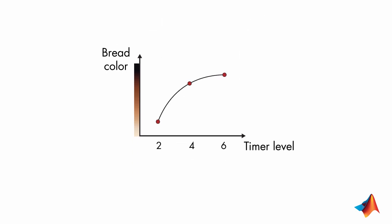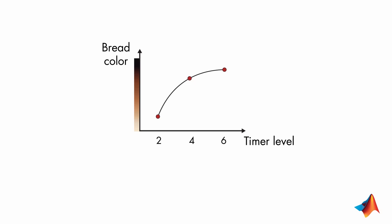Remember that you want to find the time setting for your desired bread color. To find this mathematically, let's equate the input to u and the output to y. In the experiments, for different values of u, you found the corresponding values of y. So, you can write y as a function of u.